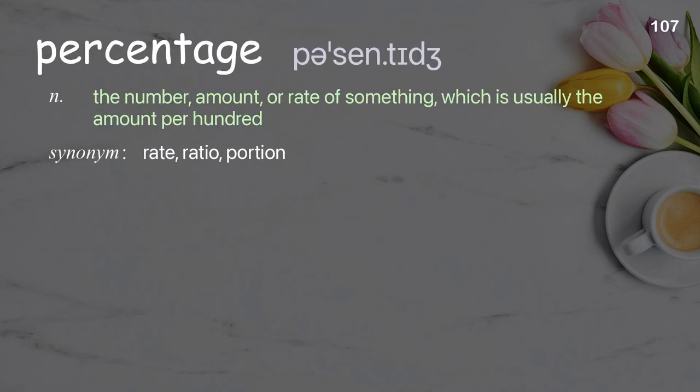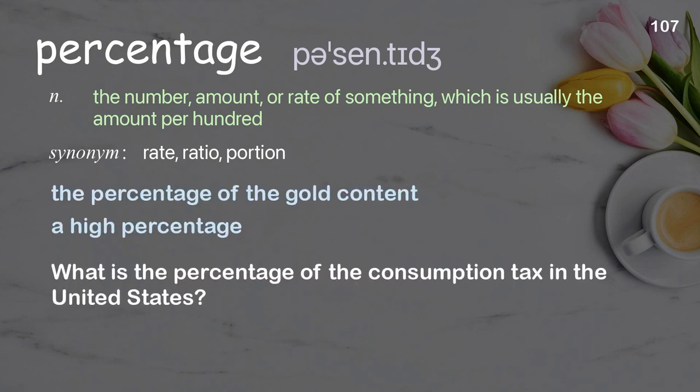Percentage. The number, amount, or rate of something, which is usually the amount per hundred. Examples: the percentage of the gold content, a high percentage. What is the percentage of the consumption tax in the United States?